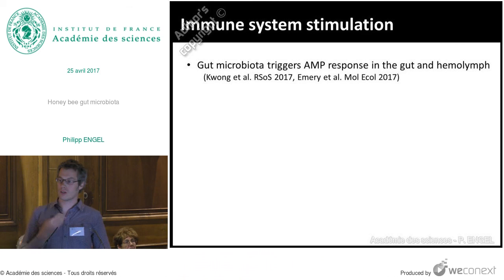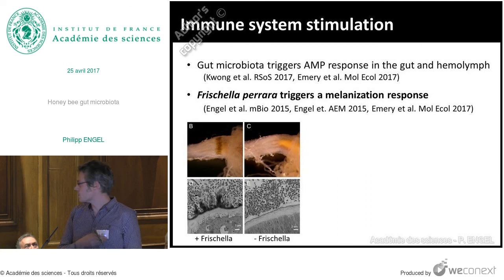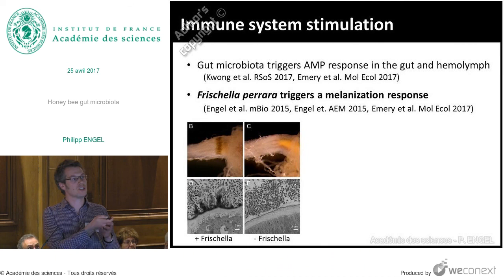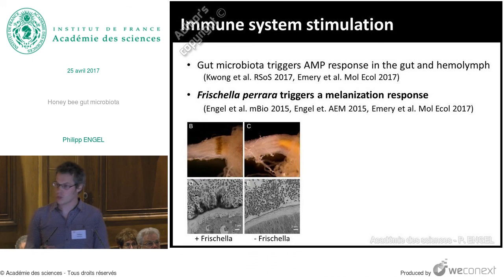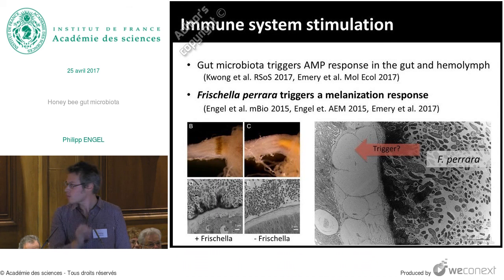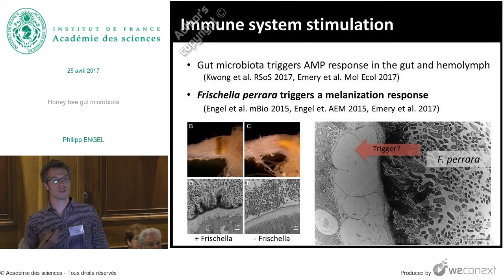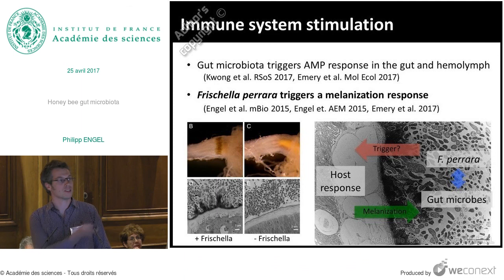We have also contributed to understanding that the gut microbiota affects and triggers the immune system of the bee in the gut as well as in the hemolymph. My favorite bacterium of this community so far has been Frischella perrara, a gammaproteobacterium which localizes to a very specific region in the gut called the pylorus. It colonizes only there at the host's epithelium and causes a brown-to-black band, which is a melanization response of the host. This is a bee with Frischella and this is a bee without Frischella. The melanin is deposited on the host epithelium between the gut lumen and the epithelial cell layer.